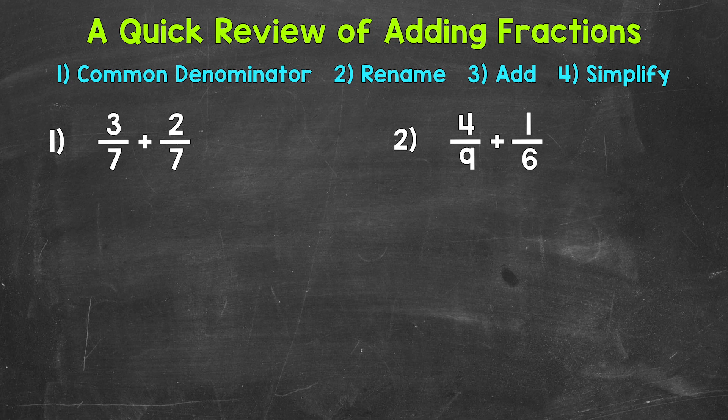That means we can add. So we add the numerators. 3 plus 2 is 5. So this is going to equal 5. And then we keep our denominator the same. 5 7ths is our answer. We can always look to see if we can simplify. The only common factor between 5 and 7 is 1. So we are done. 5 7ths is in simplest form and our final answer.